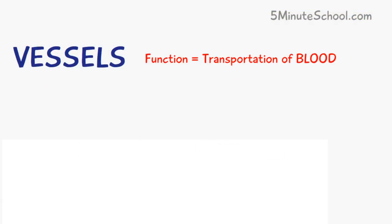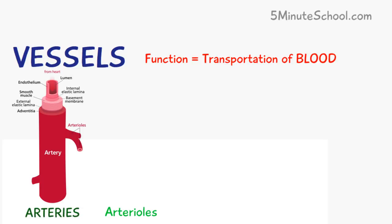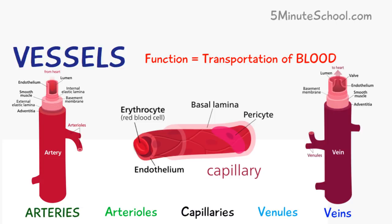Blood is contained inside blood vessels, and you can think of them as a network of tubes which transport the blood to different parts of the body. There are five main types of blood vessels: arteries, arterioles, capillaries, venules, and veins.